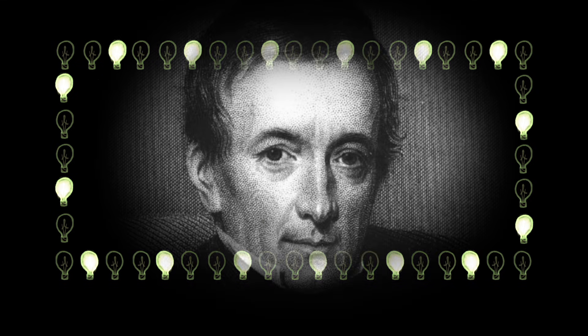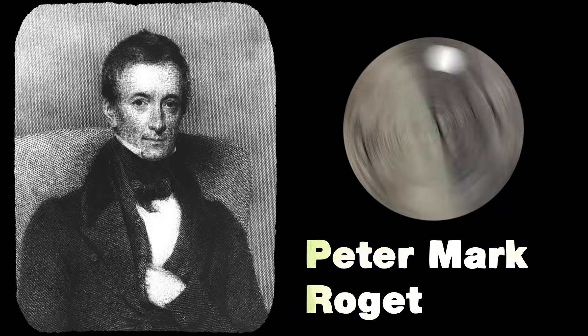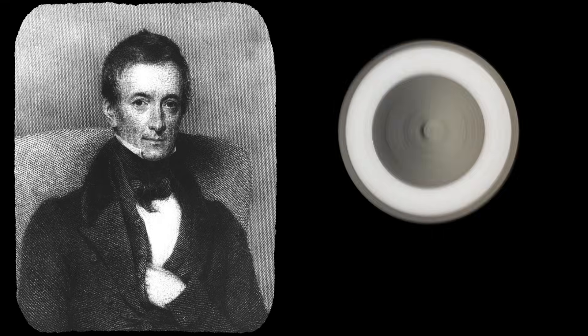The term is attributed to the English-Swiss physicist, Peter Marc Roget, who, in the early 19th century, used it to describe a particular defect of the eye that resulted in a moving object appearing to be still when it reached a certain speed.